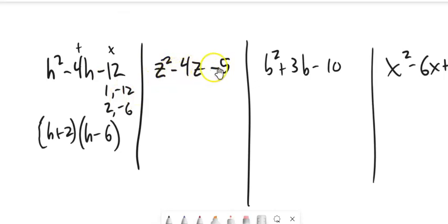Same sort of thinking here. Since it adds to a negative, the negative number is going to have to be greater in magnitude of the two. 5 is just 5 and 1, negative 5 and 1, so x plus 1, x minus 5.